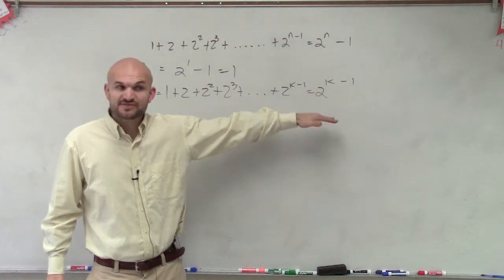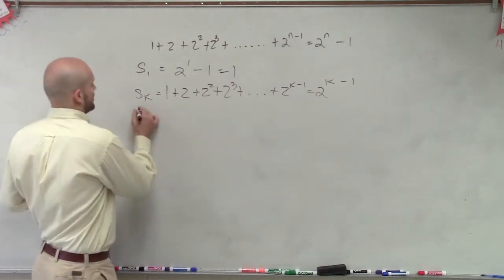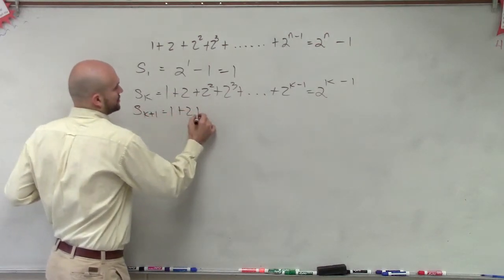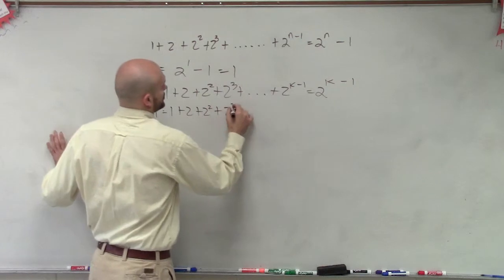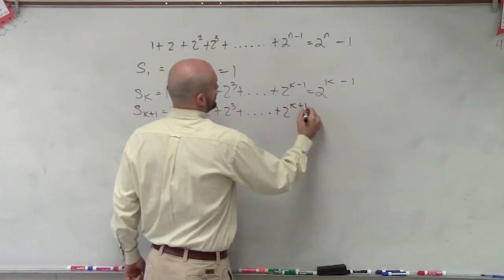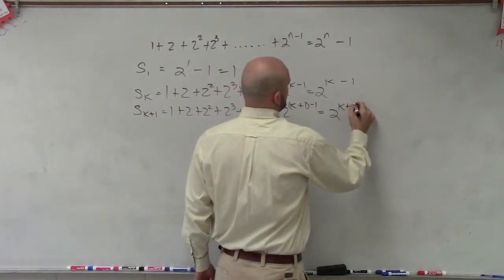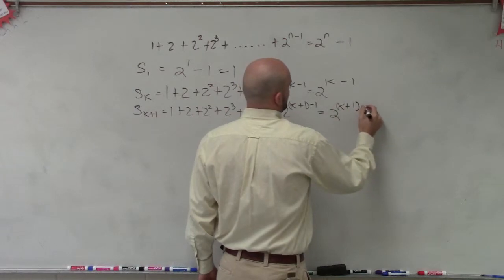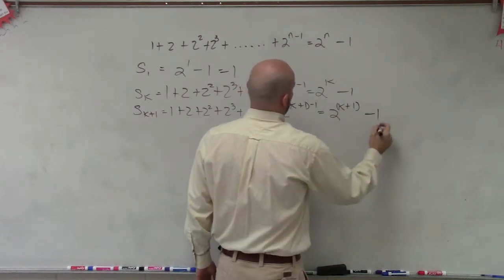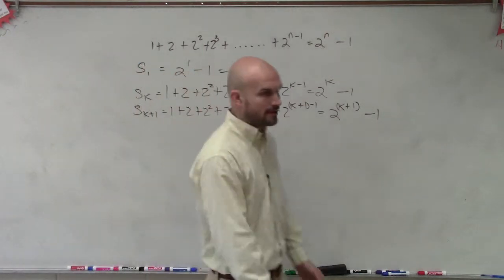Now what I want to do is find the sum of the next term k plus 1. So I say, all right, S of k plus 1 equals 1 plus 2 plus 2 squared plus 2 cubed plus dot dot dot plus 2 times k plus 1 minus 1 equals 2 to the k plus 1 minus, oh wait, that's minus 1 down below. Sorry. OK.